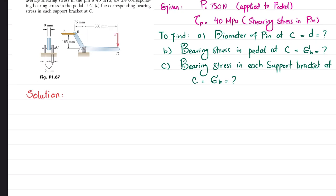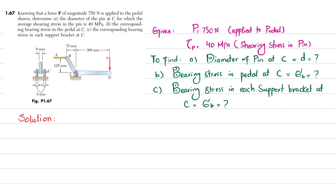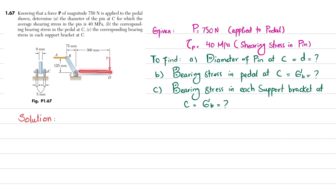Welcome back. Problem 1.67. The statement is: knowing the force P of magnitude 750 newtons is applied to a pedal as shown, determine the diameter of the pin at C for which the average shear stress in the pin is 40 megapascals. Part B is the corresponding bearing stress in pedal at C, and part C is the corresponding bearing stress in each bracket.